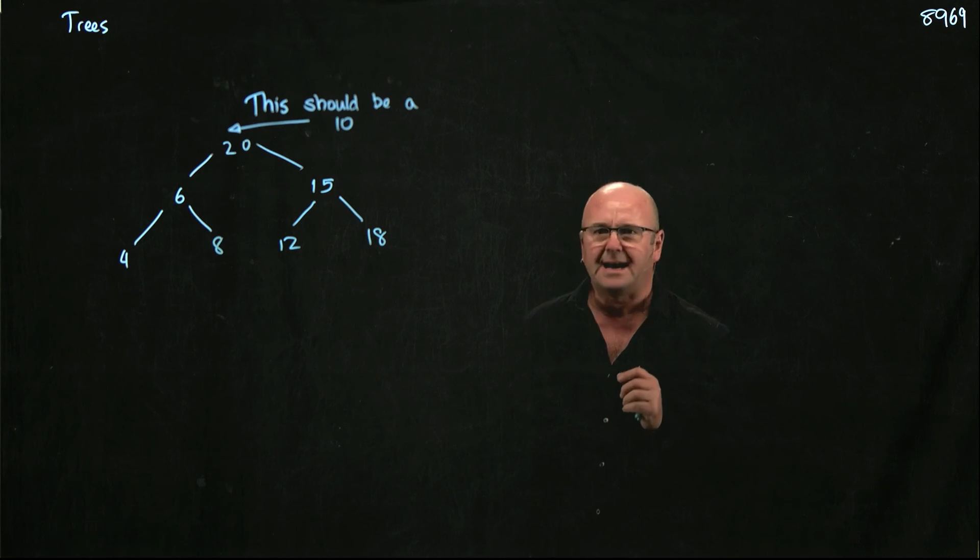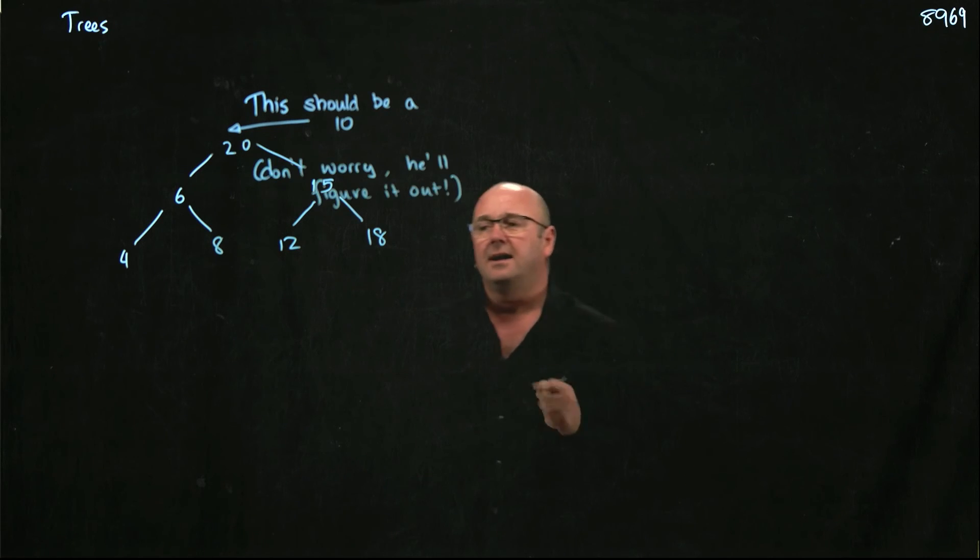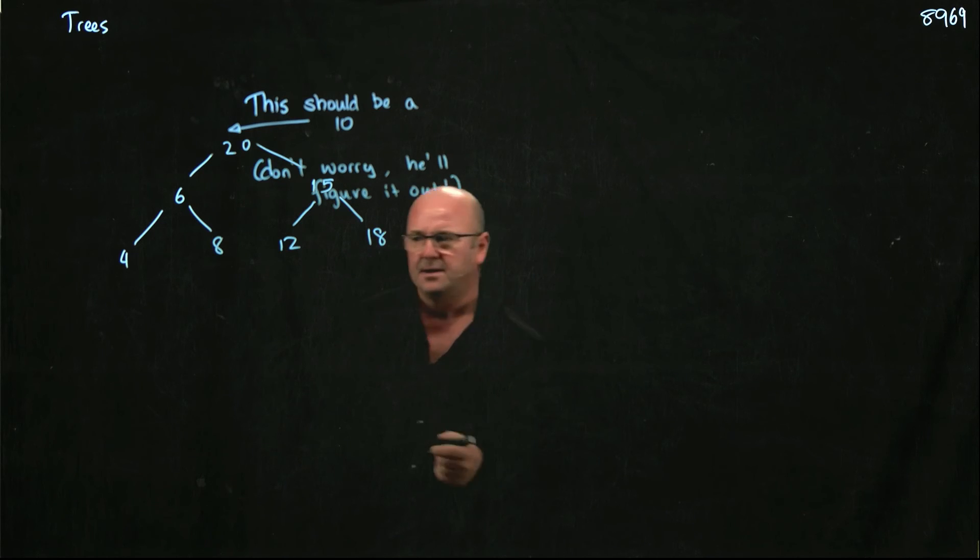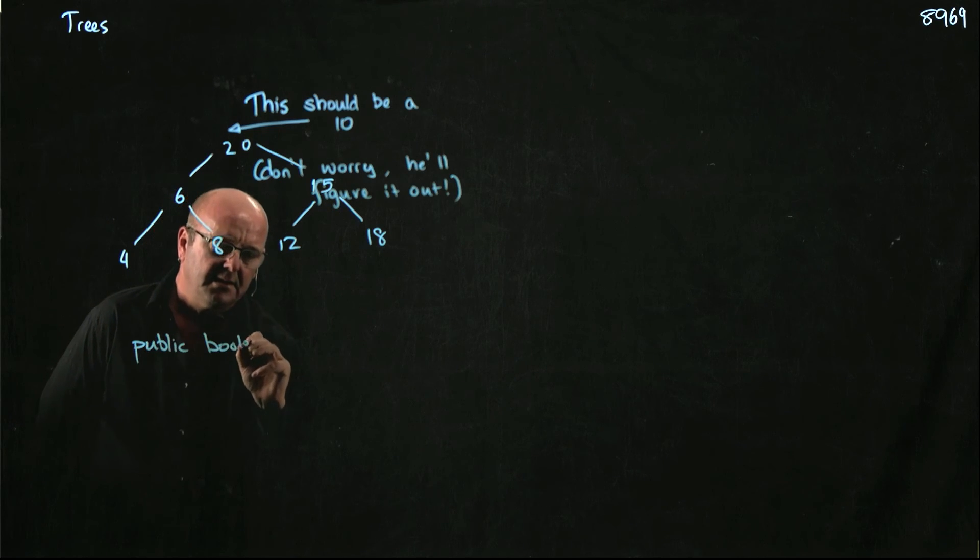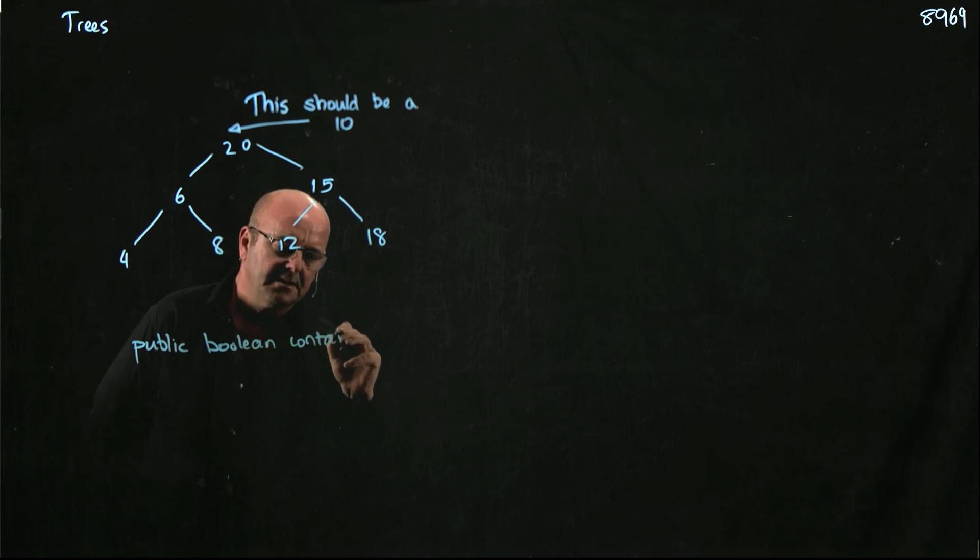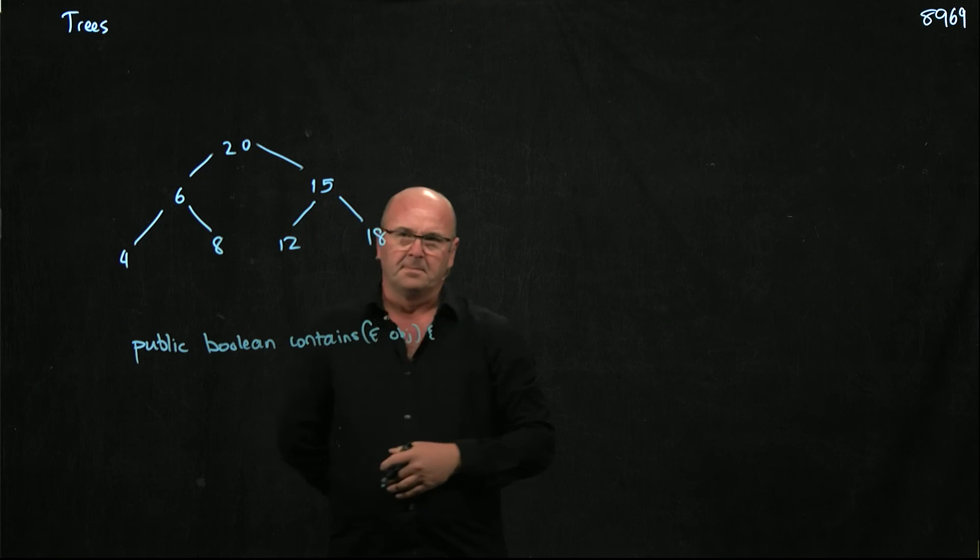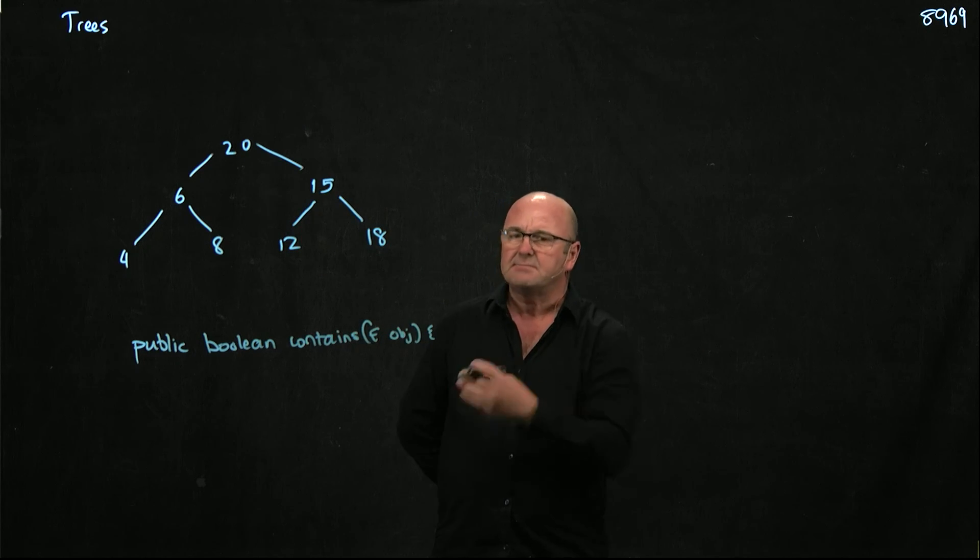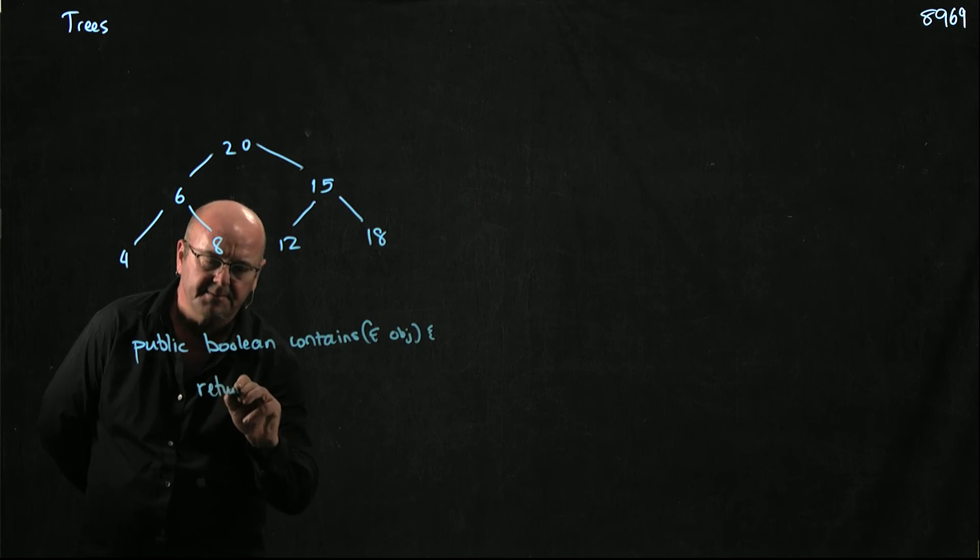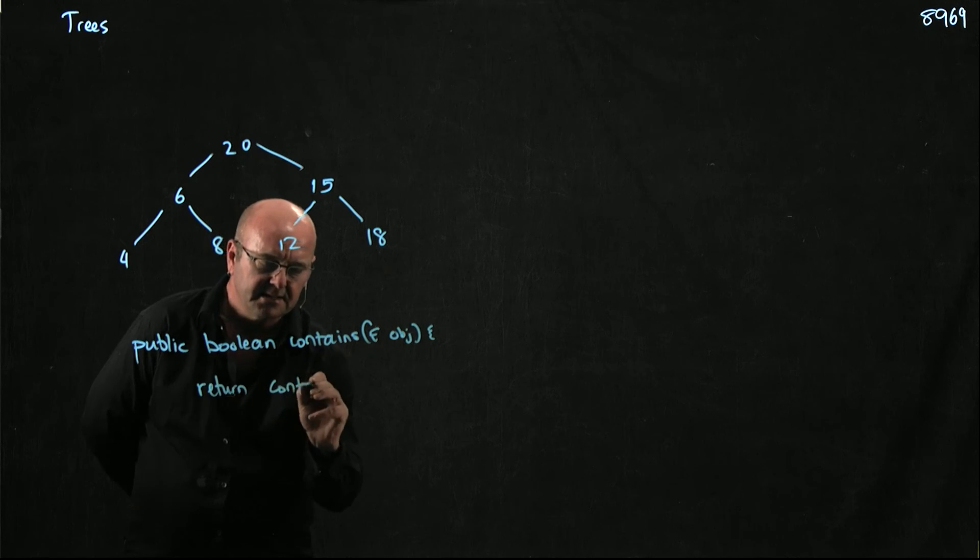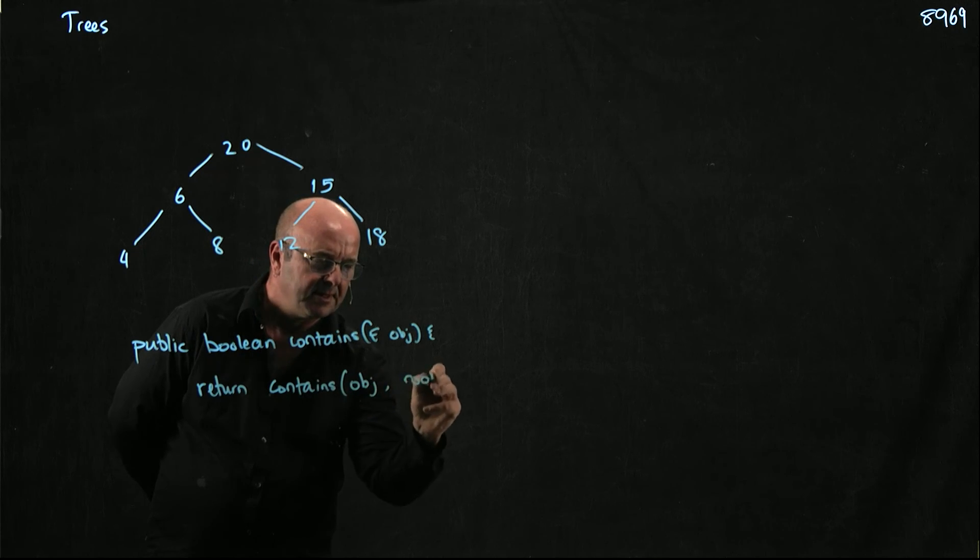So we've seen a recursive add method. Let's have a look at another method that's also recursive. It's going to be the same idea. We're going to overload the method. So we're going to start with a method, public boolean contains e object. And that's the method that we're going to allow people to use. And we're going to return contains object and root.